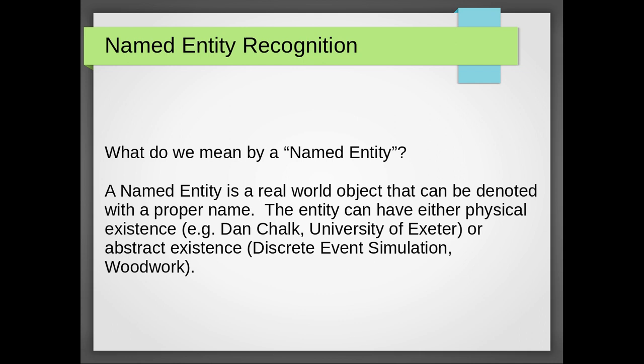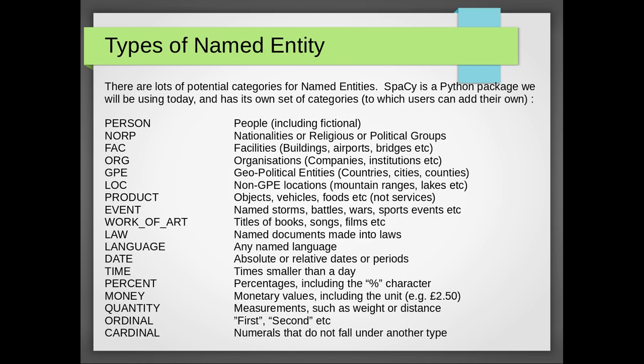There are many different potential categories for named entities, and different packages use different lists. SpaCy is a Python package we're using today, and is probably the most widely used natural language processing parsing package. SpaCy has its own set of default categories, but users can add their own. In SpaCy, named entities can be of type PERSON — people including fictional characters.